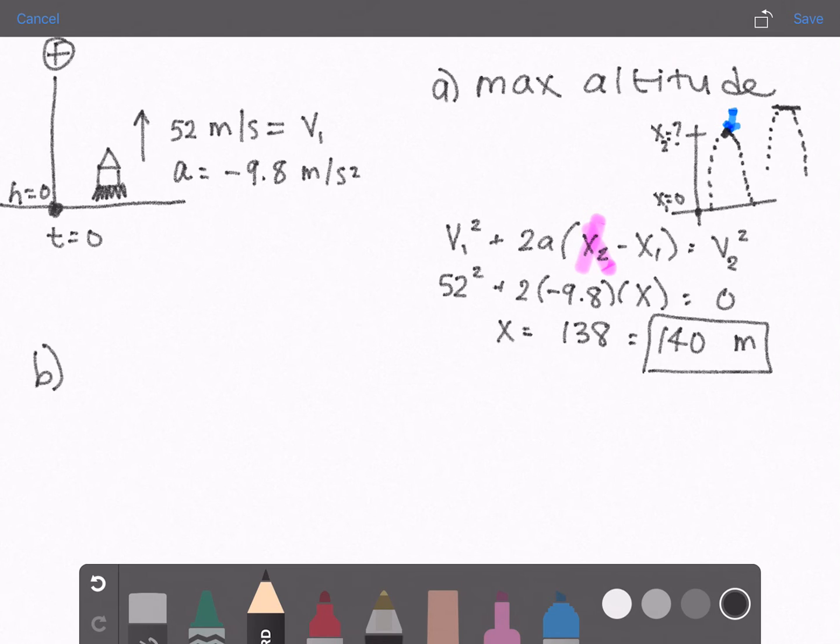Part B: Find its altitude at 1 second. So now our time is equal to 1 so let's use an equation that has time in it. We'll use x1 plus v1 times t plus 1 half at squared equals x2. So we're finding x2 in this problem.